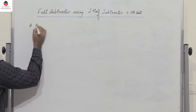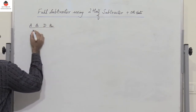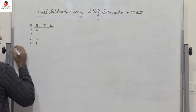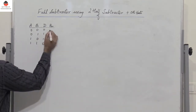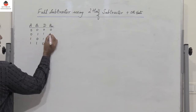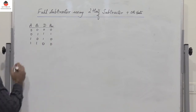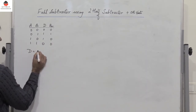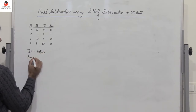Let's consider two inputs A and B, and then we have the difference and borrow. The inputs are: 0,0 — 0,1 — 1,0 — 1,1. The difference is going to be 0, 1, 1, 0. And what about the borrow? It's going to be 0 here; 0 minus 1 of course gives a borrow of 1, then 0, and 0.